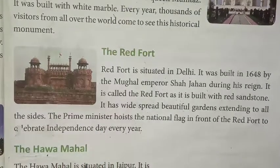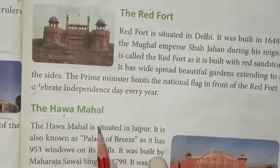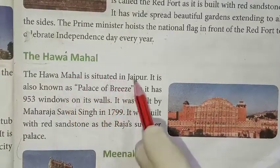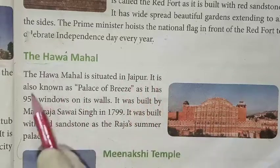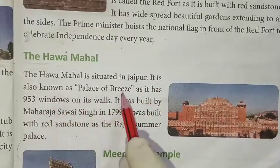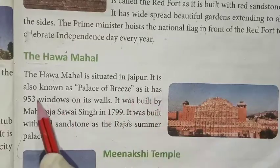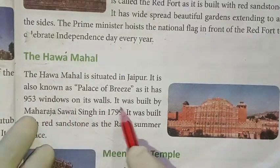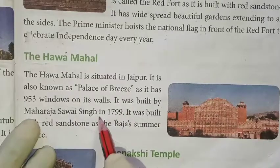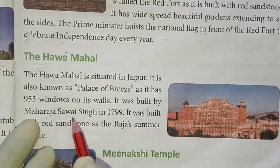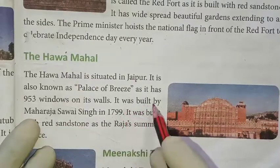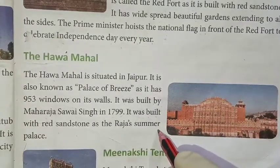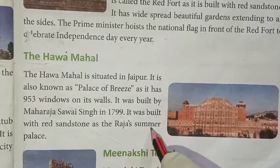This is the Hawa Mahal, also known as the Palace of Winds. It has 953 windows on its walls. It was built by Maharaja Sawai Singh in 1799. It was built with red sandstone as the raja's summer palace.